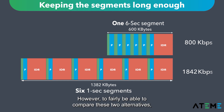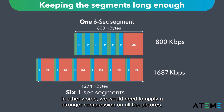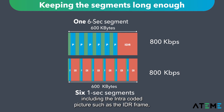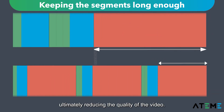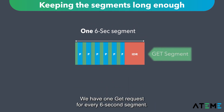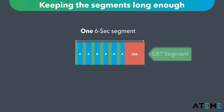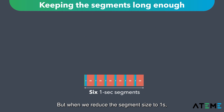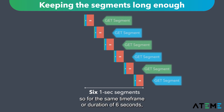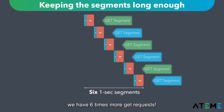However, to fairly compare these two alternatives, we need to maintain the bitrate equal at 800 kilobytes per second. In other words, we will need to apply a stronger compression on all the pictures, including the intra-coded picture such as the IDR frame, ultimately reducing the quality of the video. The second aspect is the number of HTTP requests. We have one GET request for every six-second segment, but when we reduce the segment size to one second, we still have one HTTP request per segment. So for the same time frame of six seconds, we have six times more GET requests, which has an impact on traffic and the CDN cache table.